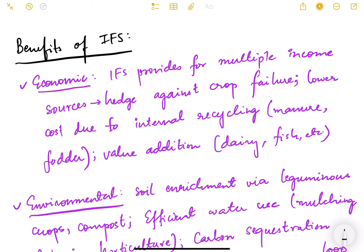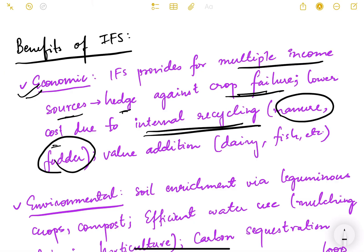What are the benefits of IFS? First is the economic benefit. IFS provides multiple income sources, it hedges against crop failure, lower cost due to internal recycling. If there are animals, the waste product can be used as manure for crops and crops can be used as fodder for animals. Poultry droppings can be used as feed for fishes if you have a fish pond.